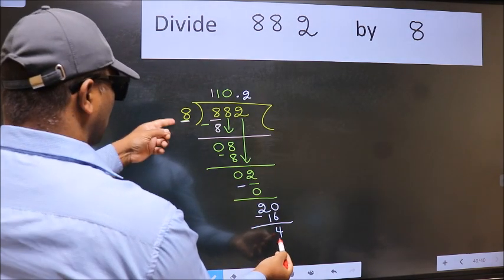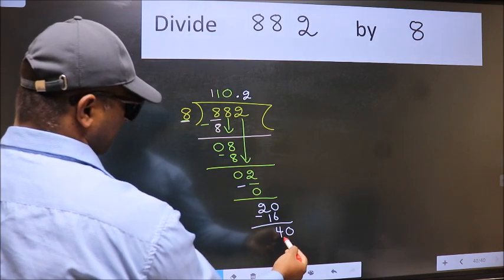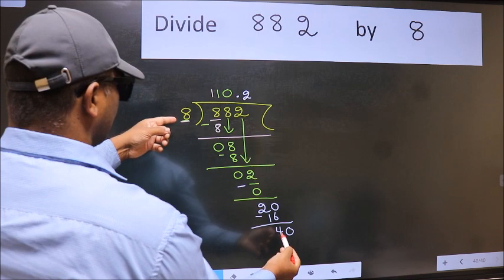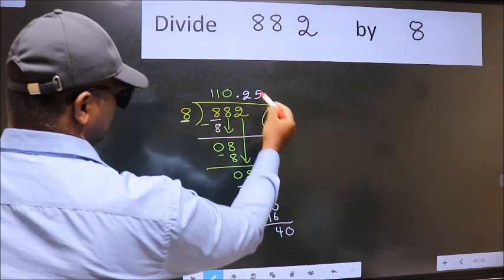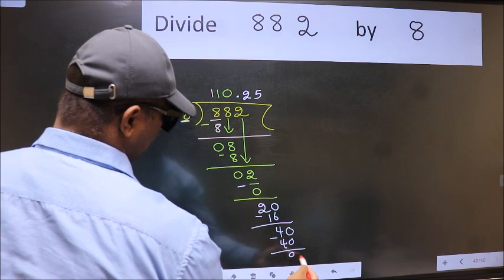4 smaller than 8. We already have the decimal. So, take 0. 40. When do we get 40 in 8 table? 8, 5 is 40. Now we subtract. We get 0.